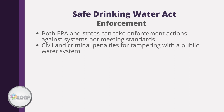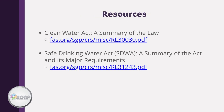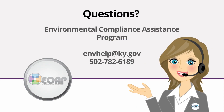Both the EPA and local states can take enforcement actions against systems not meeting water quality standards. Civil and criminal penalties can also be assessed for tampering with a public water system. The Federation of American Scientists has excellent breakdowns on many major scientific and environmental laws, including the Clean Water Act and the Safe Drinking Water Act, available at the links provided. The Kentucky Environmental Compliance Assistance Program hopes you have enjoyed this presentation — feel free to contact us if you have any questions. Thank you, have a great day!